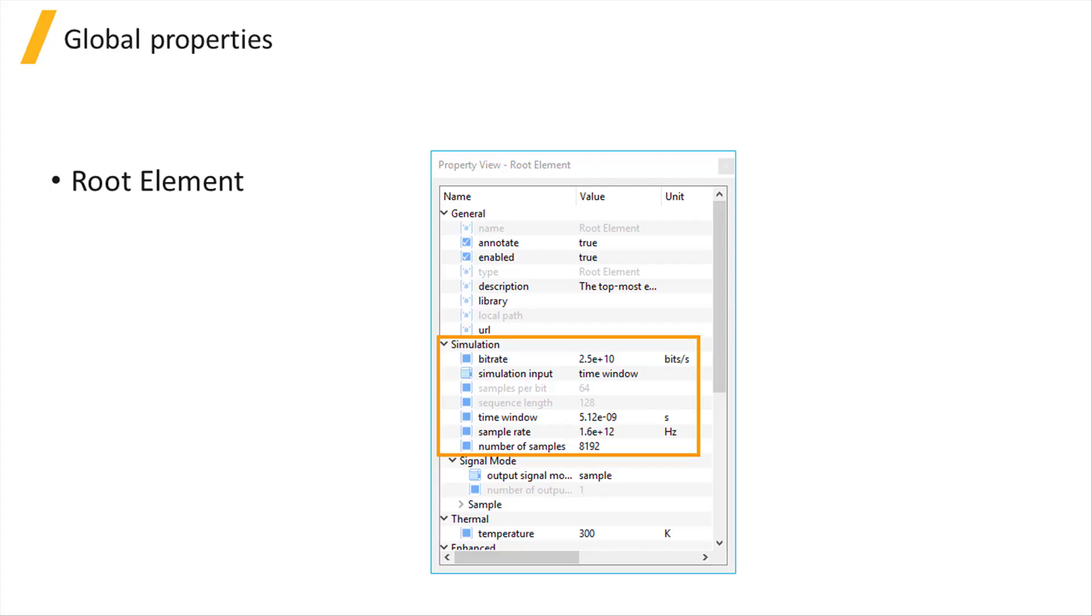In this unit, we will learn to set up the global properties for time domain simulations in Interconnect. We access the global properties by selecting the root element in the element tree.